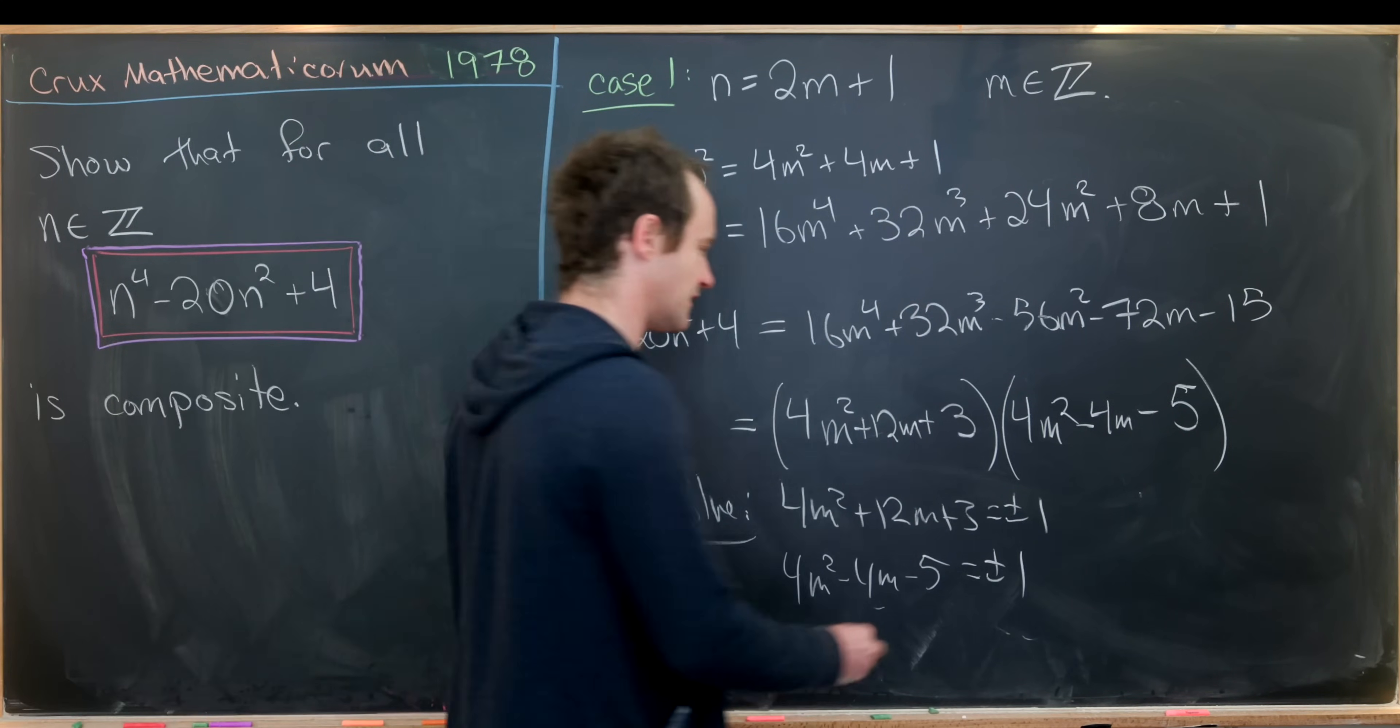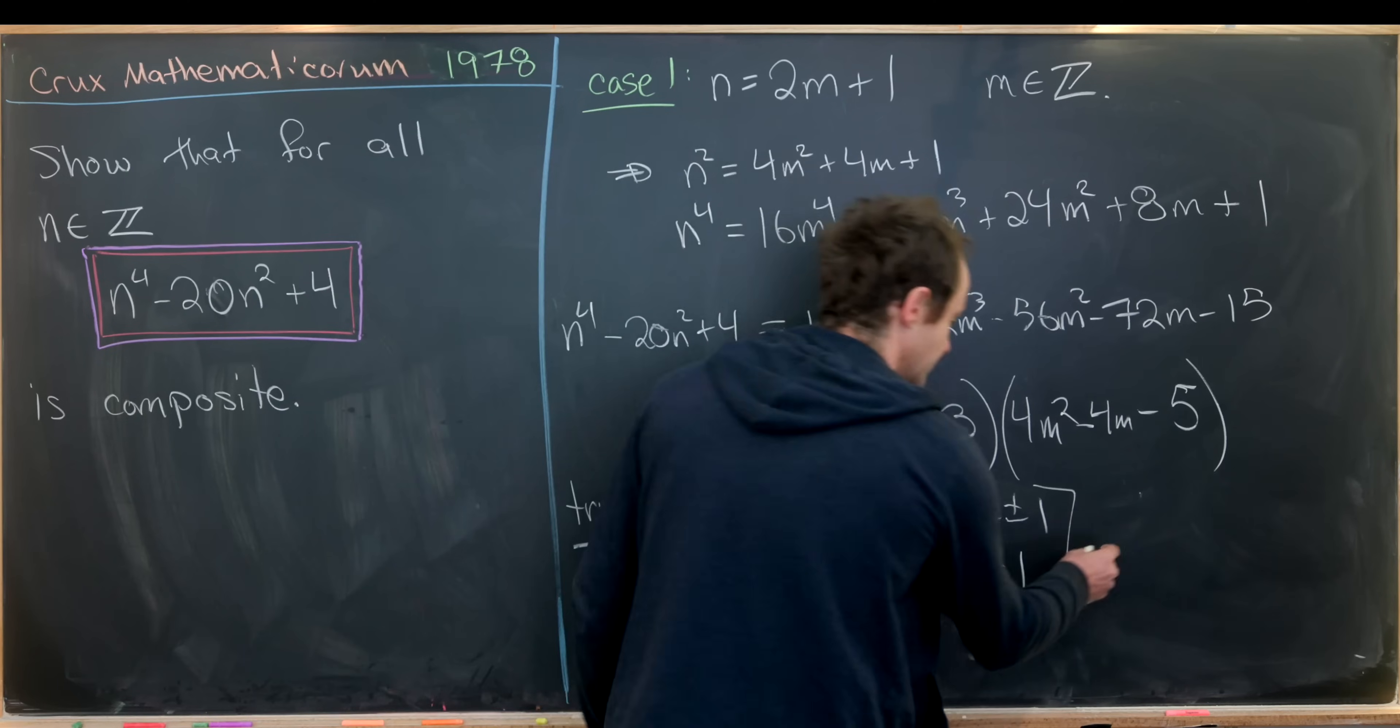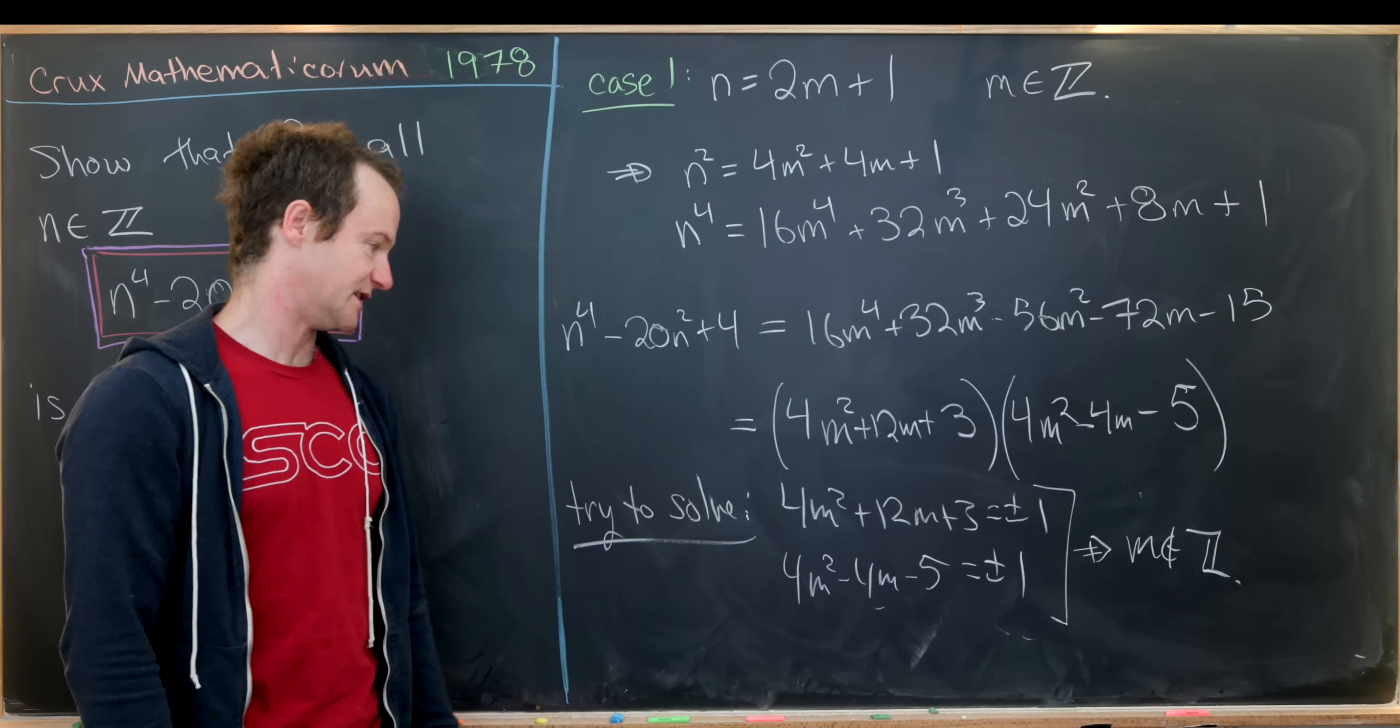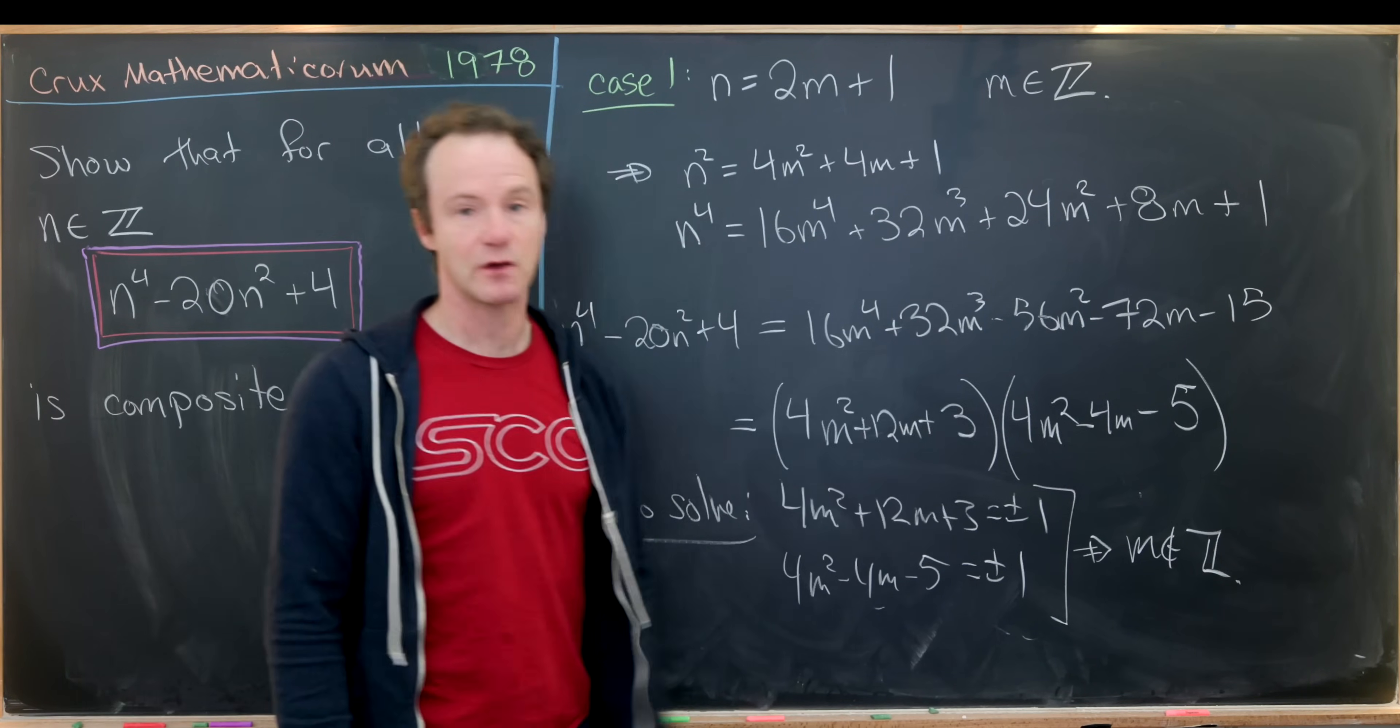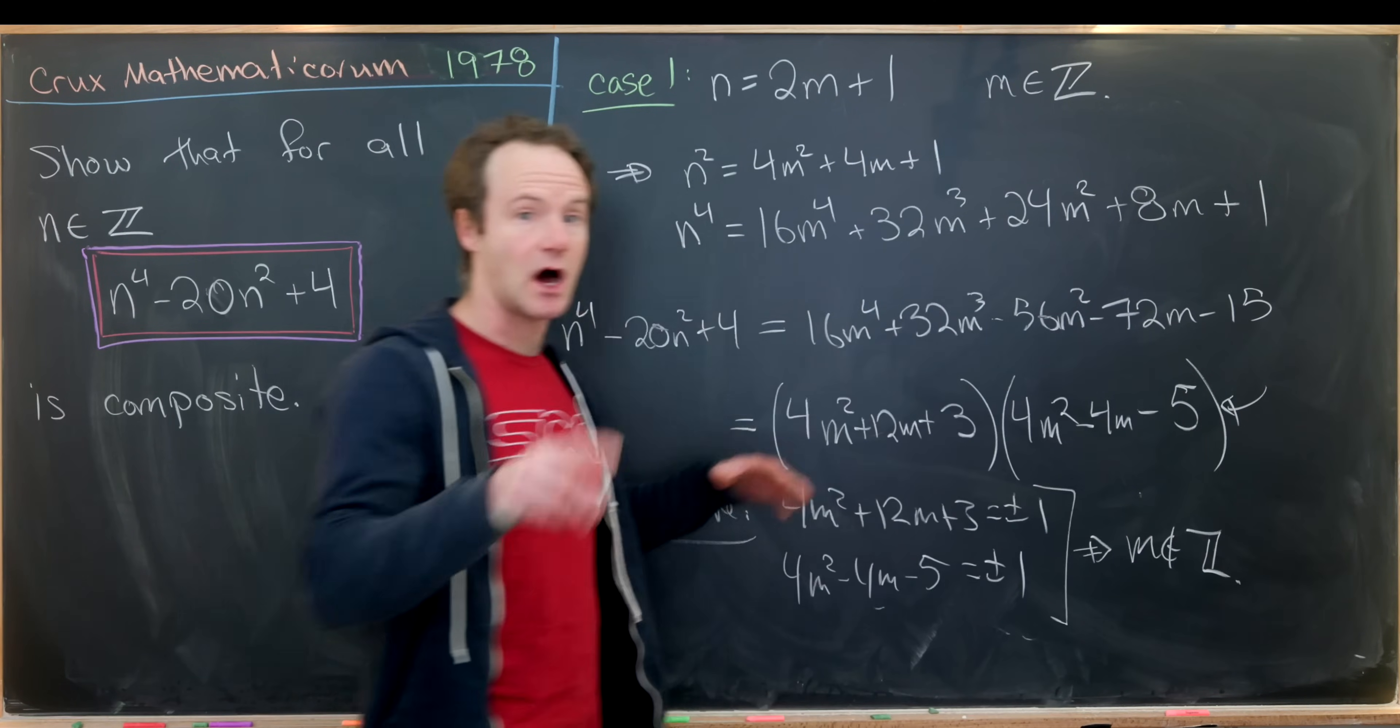And what you'll see trying to solve those, and those are easy to solve with the quadratic formula so I won't work those out, is that you get a solution for each of these which is not an integer. But we started assuming m was an integer. So what does that mean? That means these guys are never equal to 1, which means we have indeed factored this non-trivially.